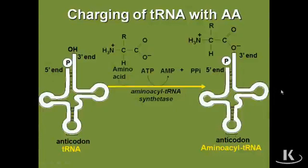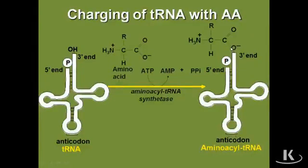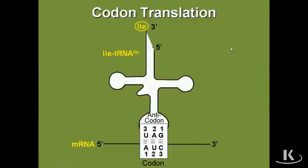So in the end, we have a charged transfer RNA — an RNA molecule with an amino acid attached to its 3' end. How does that work when we come to build a protein?